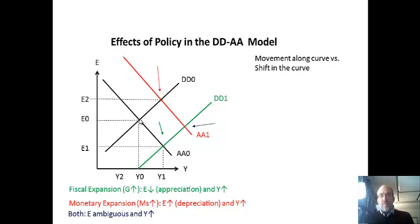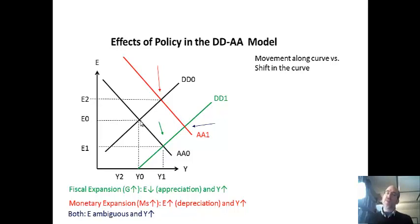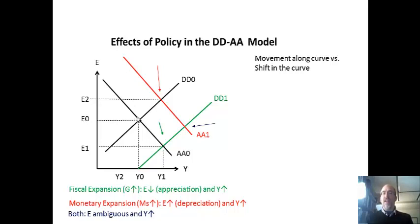If you shift one curve, that's because of something that is not the exchange rate — government spending, a tax cut, increased consumer confidence. What happens next is you move between points because of something that is the exchange rate. Government spending pushes up the dollar, and then you move along the AA curve to restore equilibrium. Similarly, if the Fed expands and weakens the dollar, that's an increase in aggregate expenditure in the goods market — the weaker dollar pushes exports along. The curve that shifts is because of something that's not the exchange rate, but that induces a movement along the other curve because the shift caused a change in the exchange rate.